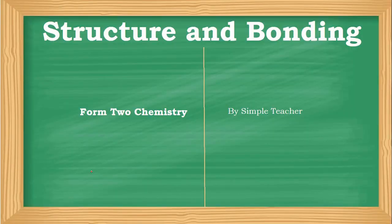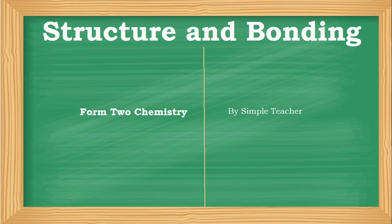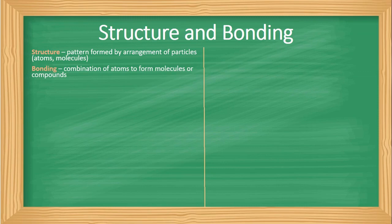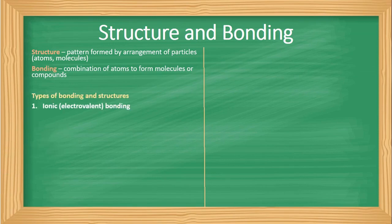Welcome again to Chemistry Simplified. Here we want to look at a common topic which is structure and bonding in Form 2. We want to simplify it and make it easy to pass questions from this topic. My name is Simple Teacher. We start by defining what a structure is — these are patterns formed by the arrangement of particles, that is atoms and molecules. In terms of bonding, this is the combination of two or more atoms to form molecules and compounds. We have about four types of bonding.